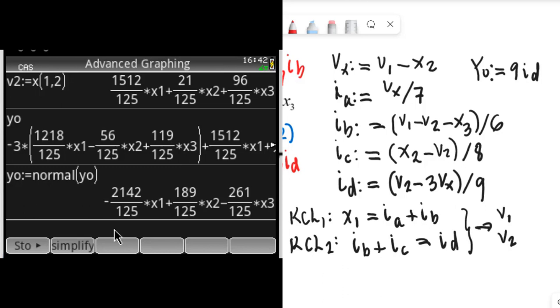But if we care only for the transfer function between X2 and Y0, we don't want the other two terms. So we make X1 and X3 zero. We gain that the transfer function in that case is 189 divided by 125.